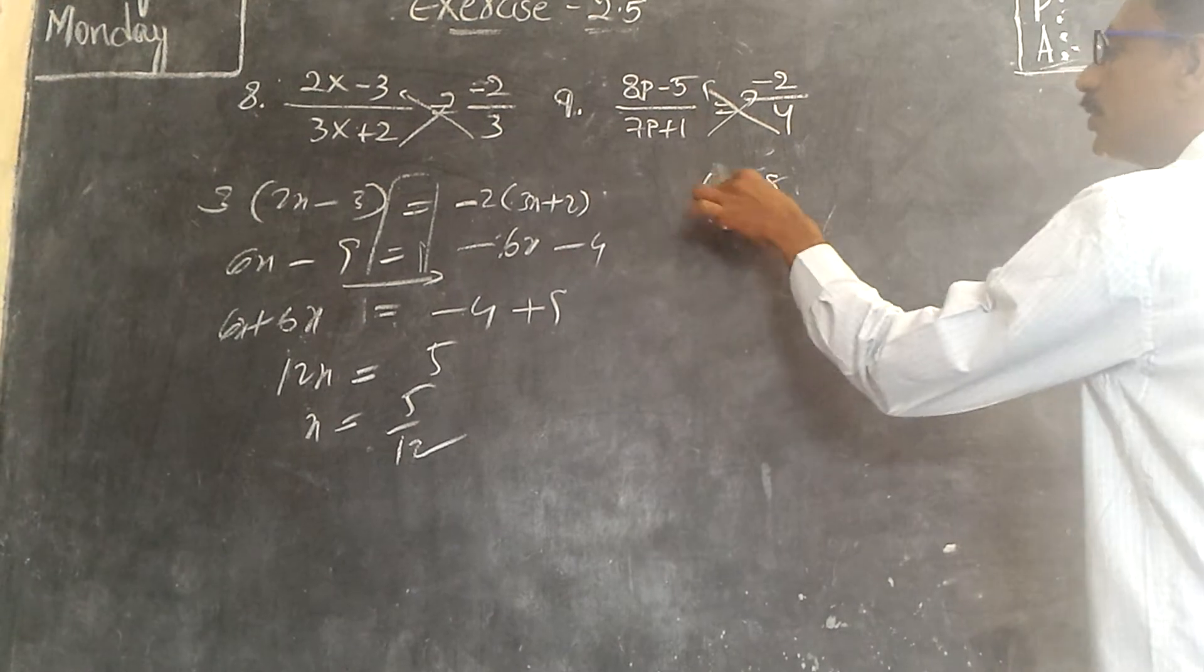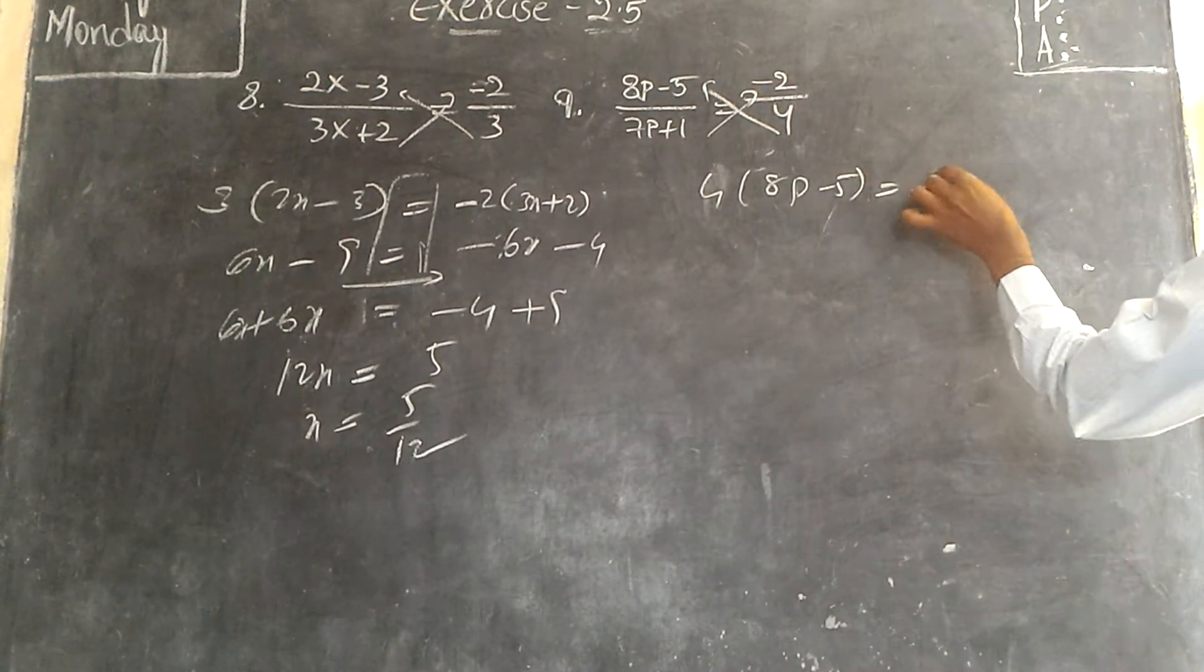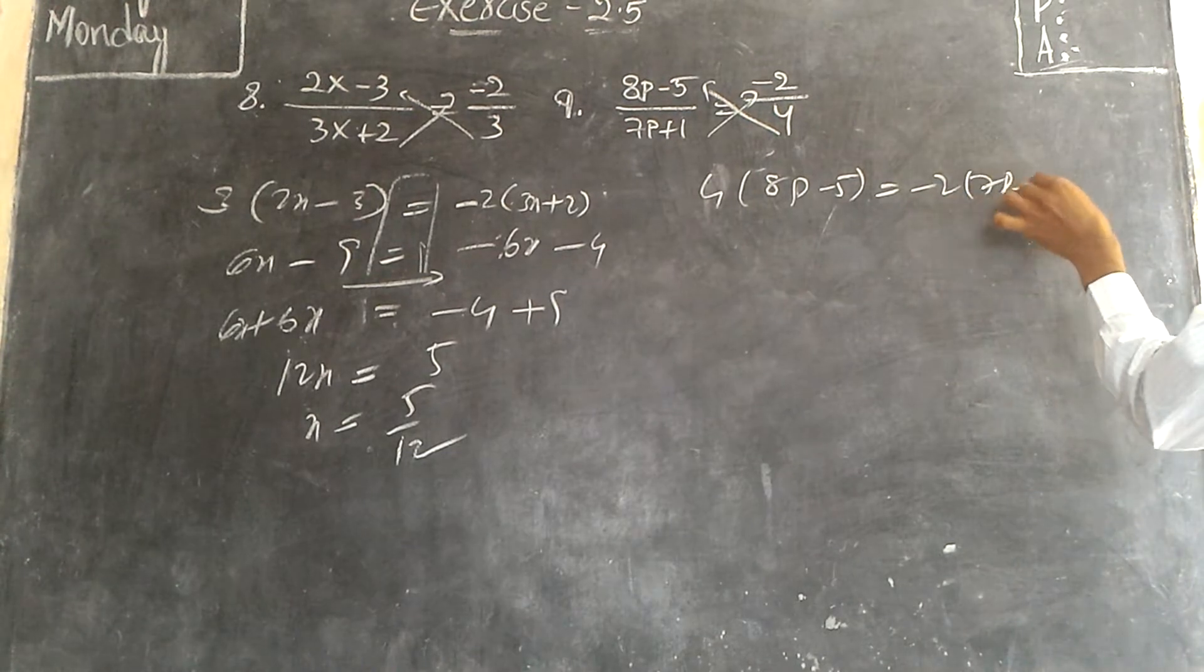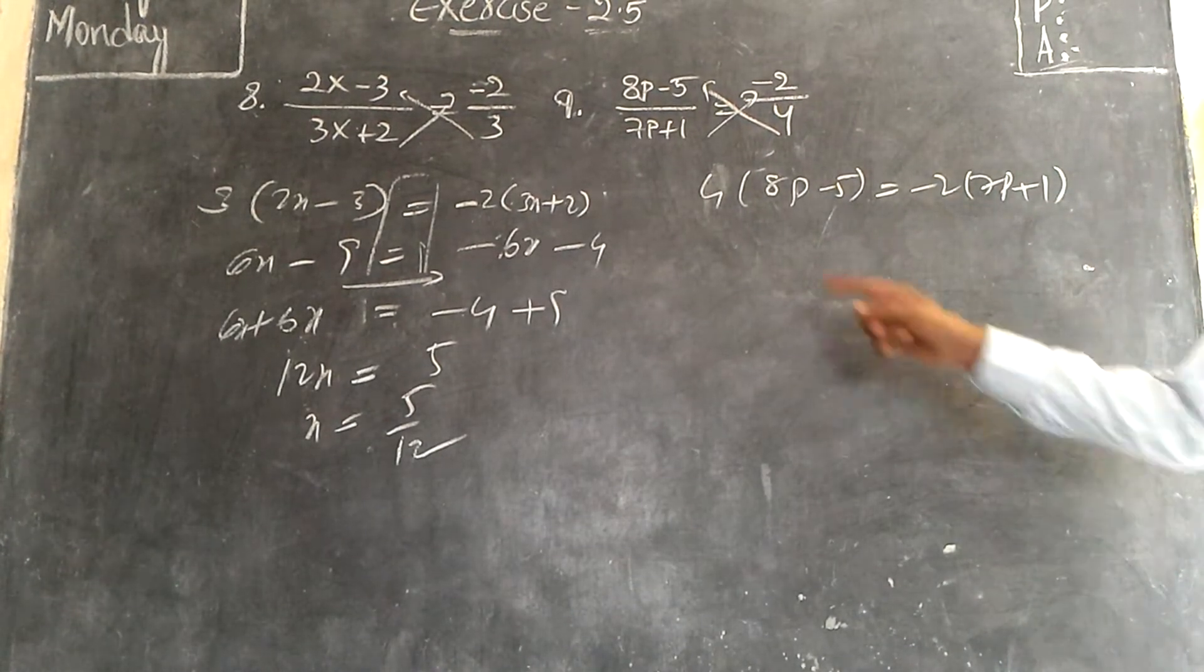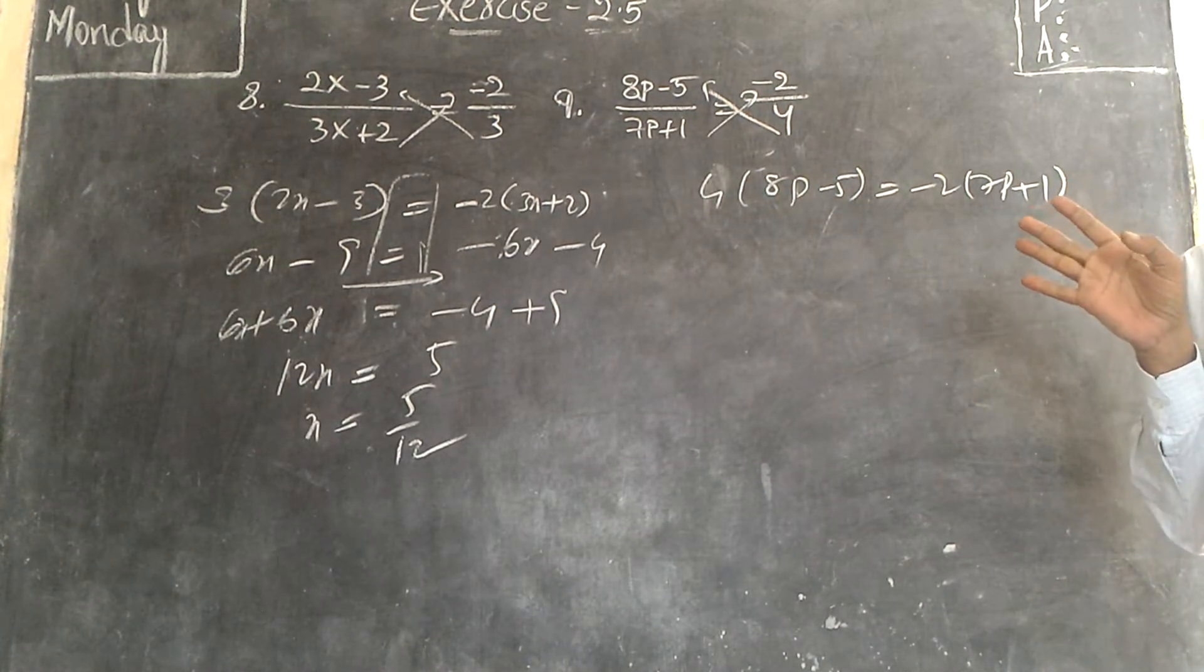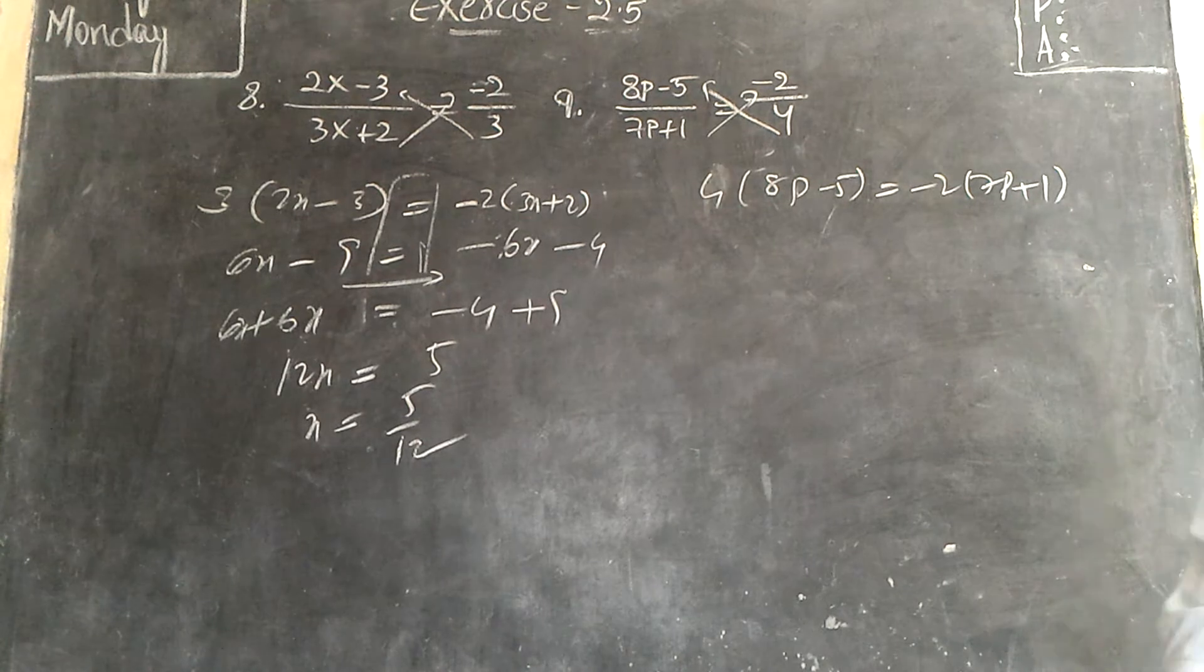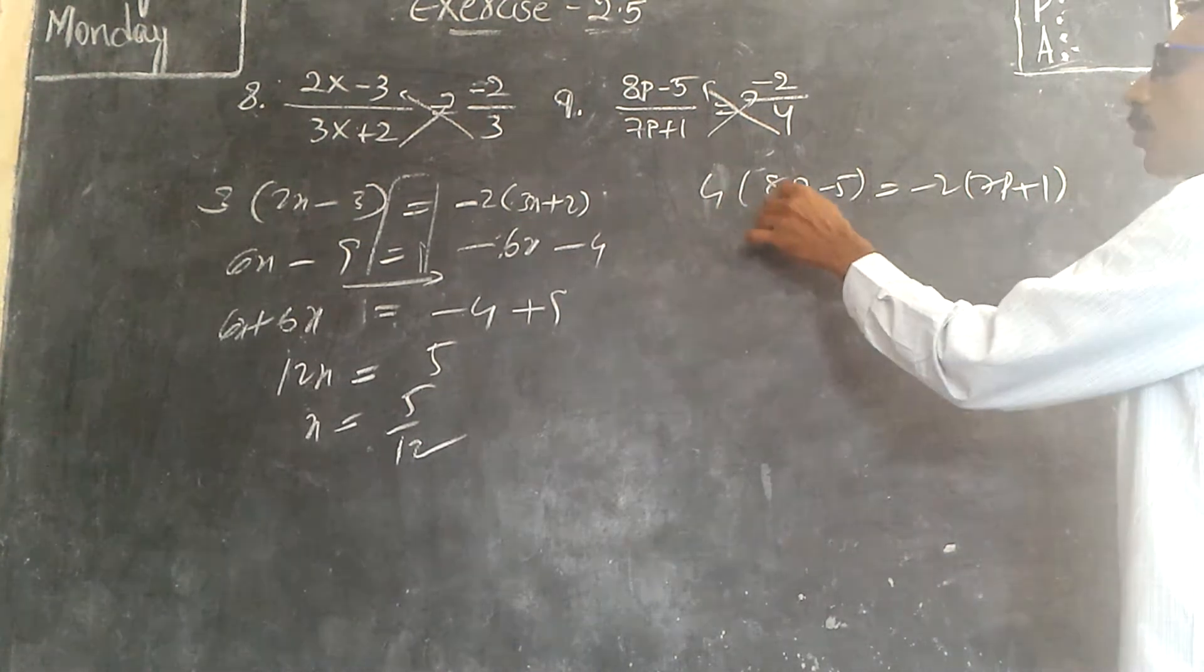This is multiplied by this, minus 2 into 7p plus 1. Is it clear now? This is multiplied by this and this is multiplied by this. Because this is a distributed problem.